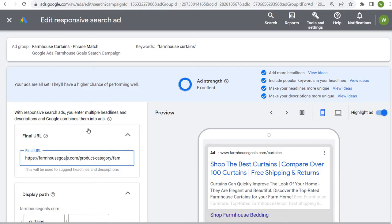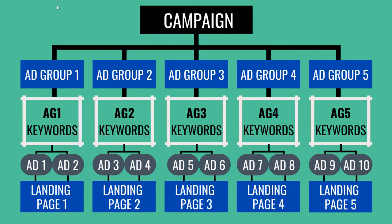When you're coming up with your account structure, I recommend structuring it something like this: you have your campaign at the very top, and within your campaign are ad groups. I put the ad group and landing page the same color because the way I decide to create different ad groups is based on the landing pages where I'm sending traffic. You want to group keywords so they are relevant to your advertisements and your landing pages — multiple ads in each ad group all going to the same landing page.